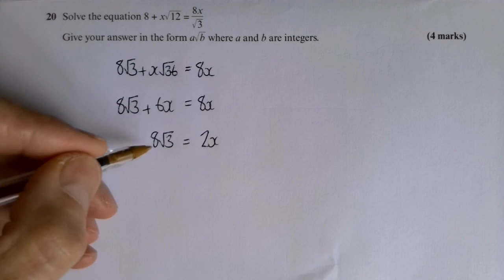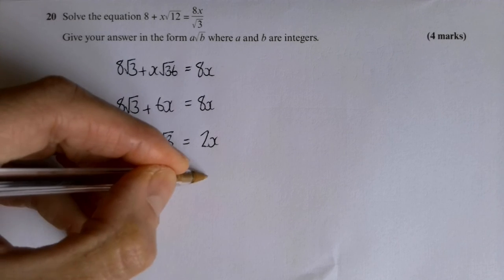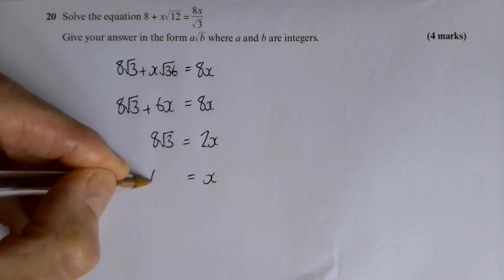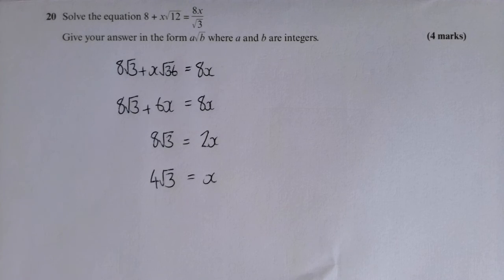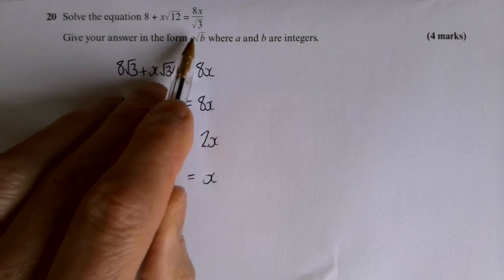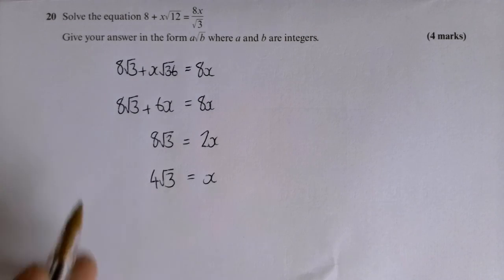And they want me to solve it. They want me to know what x is. Well, if I know that 2x is 8 lots of root three, then 1x will be 4 lots of root three. They want the answer in the form a root b, where a and b are both whole numbers. Bingo. Full marks.